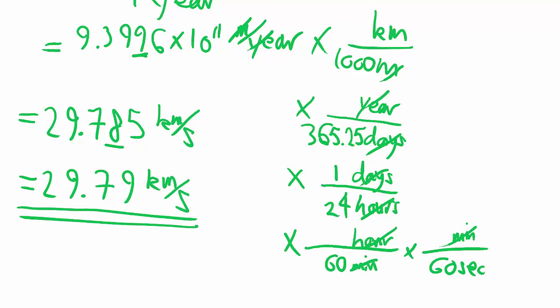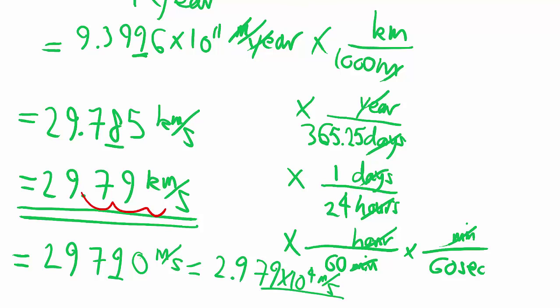In meters per second, we can be a little lazier, and just know that a kilometer, there's a thousand meters, so we move the decimal place three paces back. We end up with 29.790 meters per second. But because that's not really significant, let's just change it in scientific notation, giving us 2.979 times 10 to the 4 meters per second for our answer there.